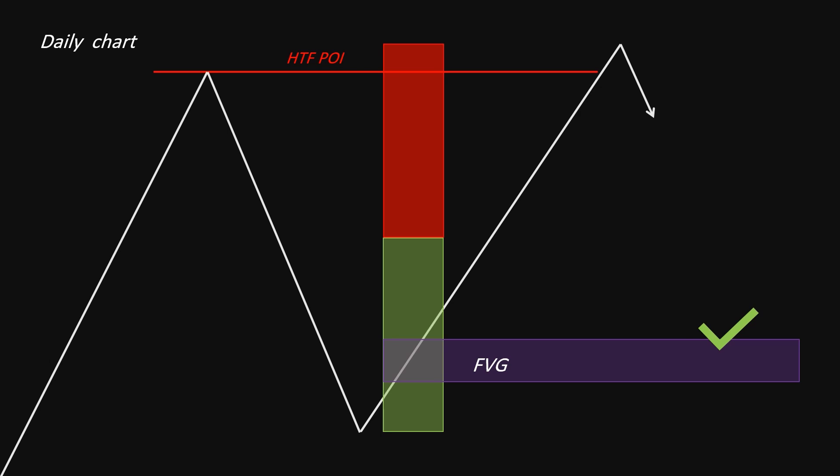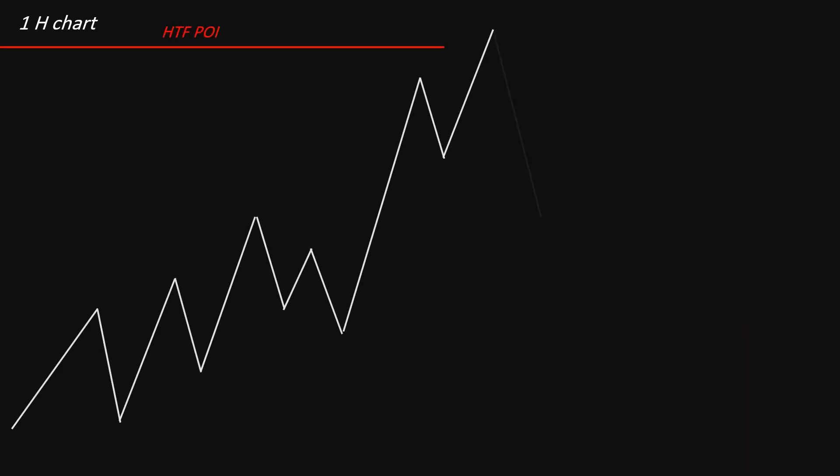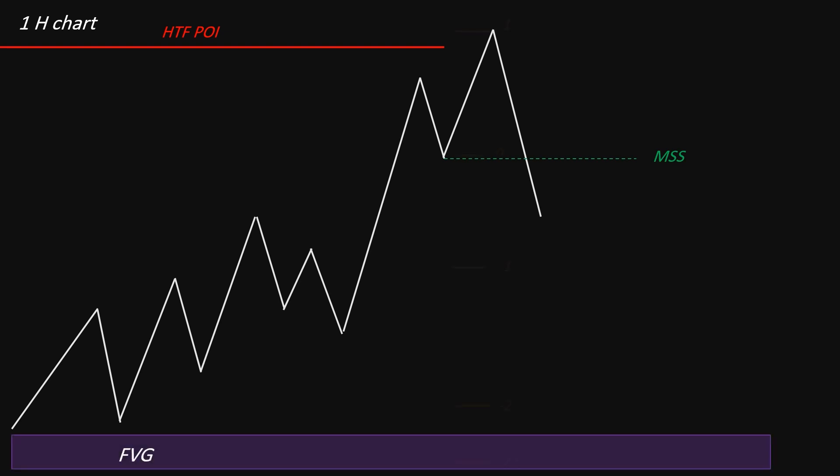On the daily chart, once external liquidity is taken out, check for a fair value gap in the discount or any FVG available. If you have a fair value gap in the discount, use that for your target. After identifying the external liquidity on the daily chart, drop down to a lower time frame like the one-hour chart. Once you've confirmed the purge, look at the one-hour time frame — you'll see the fair value gap marked as your target.